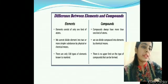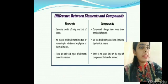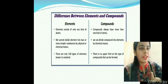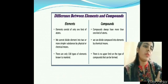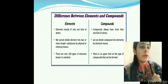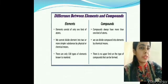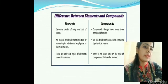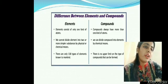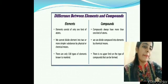Now the difference between elements and compounds. Elements always contain only one kind of atoms. Compounds always have more than one kind of atoms. We cannot divide the elements into two or more simpler substances by physical or chemical means. We can divide the compound into elements by chemical means. There are about 118 types of elements which are known to us. But there is no upper limit to the number of known compounds.